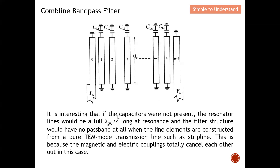It is interesting that if the capacitor is not present, the resonator line will be a full quarter wavelength long at resonance and the filter structure would not have any passband at all — when the line elements are constructed from a pure TEM mode transmission line such as strip line. If there is no capacitor and we use a pure TEM mode like strip line, we will not have any passband characteristic at all.